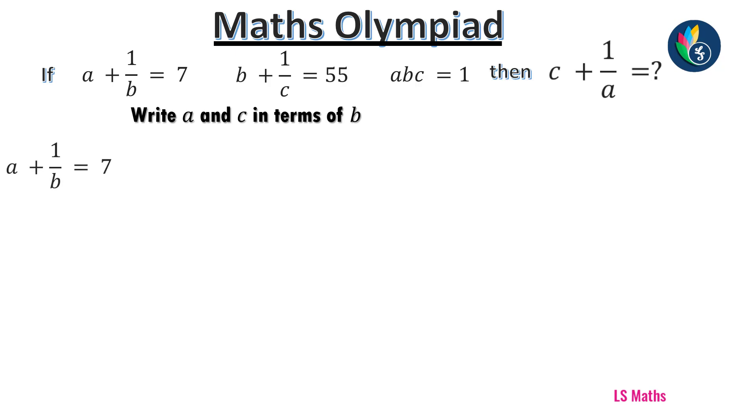Next, A plus 1 by B equals 7. This implies A equals 7 minus 1 by B. Now I take B as LCM, so it becomes A equals 7B minus 1 by B. Now let us put a box.